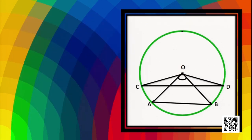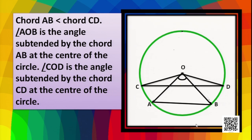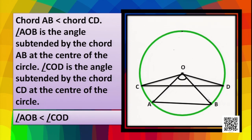Now consider two chords CD and AB. As you see, these chords are unequal — chord CD is greater than AB. The angle subtended by CD at the center is angle COD, and chord AB subtends angle AOB at the center. Angle COD is greater. So we can say: if chord AB is less than chord CD, then angle AOB is less than angle COD. That means the greater the chord, the greater the angle subtended at the center.